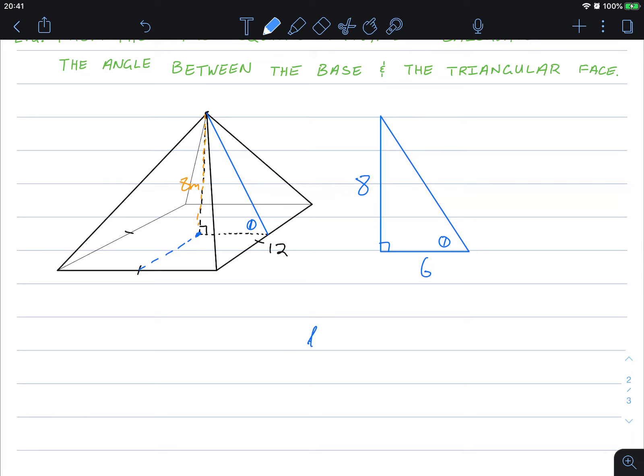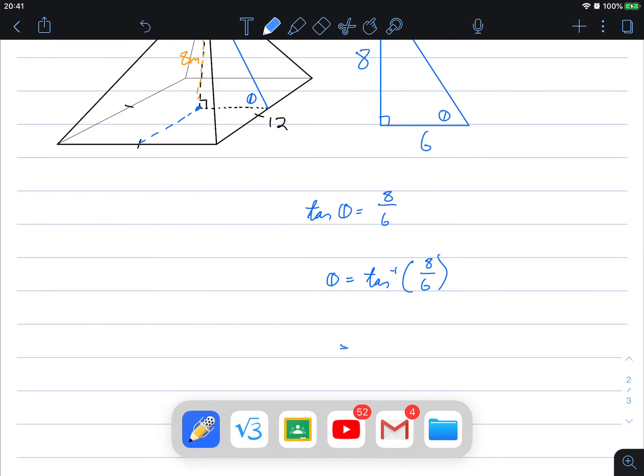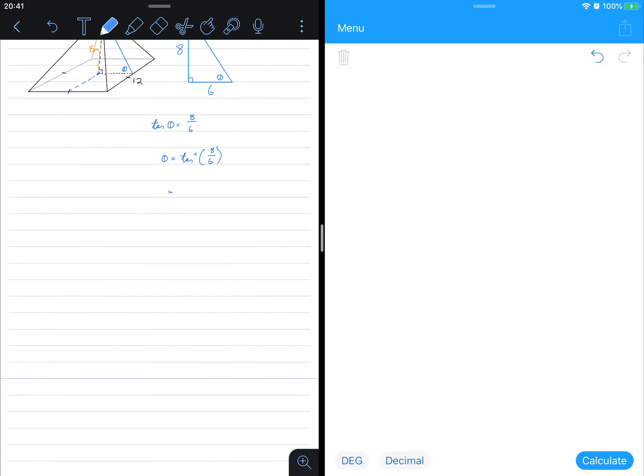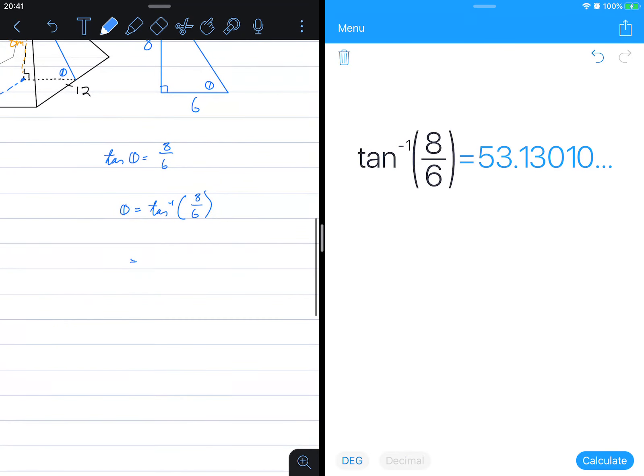We can just do this as tan of theta is equal to 8 over 6, which means theta is tan inverse of 8 on 6. We can use our calculator to figure this out. That's going to be tan inverse 8 on 6, 53 degrees.